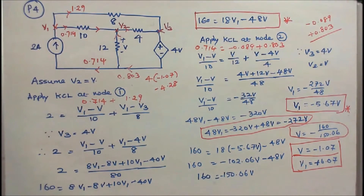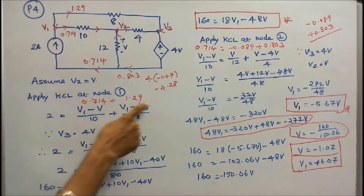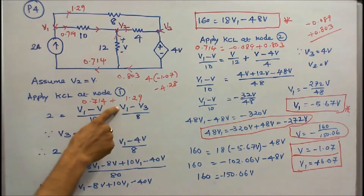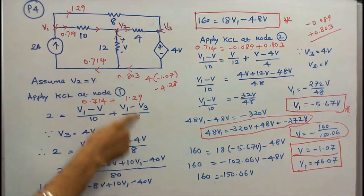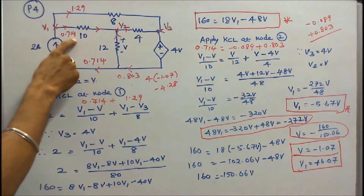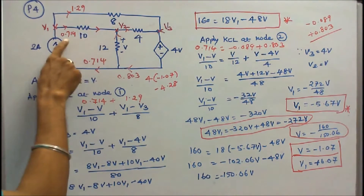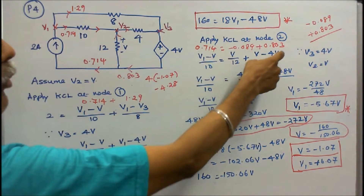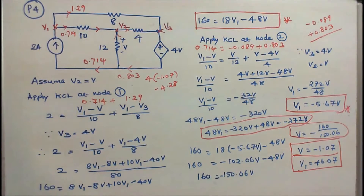Now I verify Kirchhoff's current law at node 1: 2 is equal to (V1 minus V) divided by 10, which is 0.714, plus (V1 minus V3) by 8 — with V3 equal to 4V, that equals 1.29. So 0.714 plus 1.29 equals 2. Applying Kirchhoff's current law at node 2: current entering is 0.714. V by 12 equals minus 0.089, plus (V minus 4V) divided by 4 equals 0.803, total is 0.714. Kirchhoff's current law is verified.